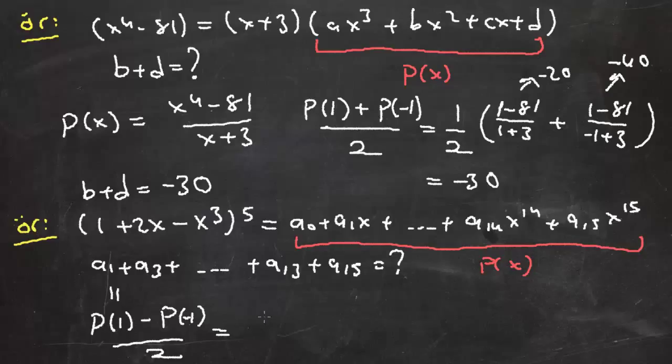Eğer bunu hesaplayacak olursak, x yerine 1 yazarsak (1 + 2 - 1)⁵ = 2⁵, -1 yazdığımızda ise (1 - 2 + 1)⁵ gelecek. Tabii ki bu ifade sıfır. Yani elde ettiğimiz şey (32 - 0)/2 = 16. Yani bu ifadede a₁ + a₃ + ... + a₁₃ + a₁₅ ifadesi ne oluyor? Bu polinomun tek dereceli terimlerinin katsayıları toplamı oluyor. Ve bu da neye eşit oluyor? Hesapladığım üzere 16'ya eşit oluyor.